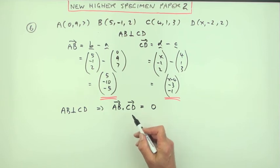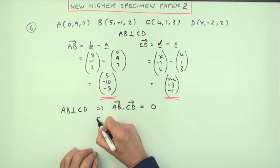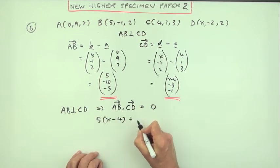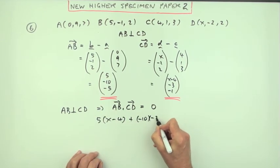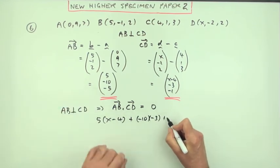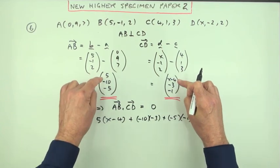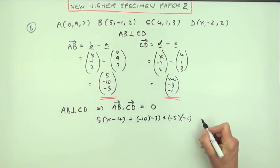Now what is the scalar product? Multiply the corresponding components. So five times X minus four plus negative ten times negative three plus the Z's. Negative five times negative one. X times the X plus the Y times the Y plus the Z times the Z. If they're perpendicular, that should come to zero.